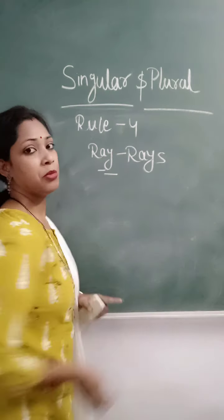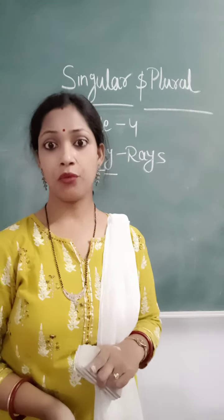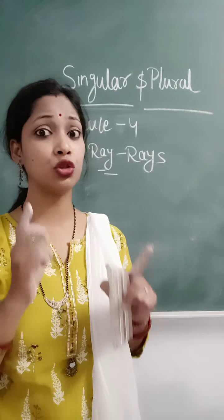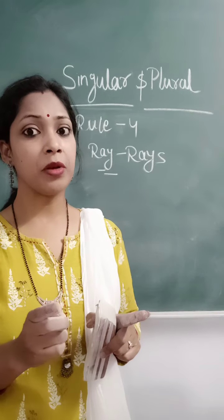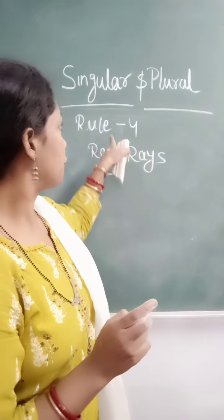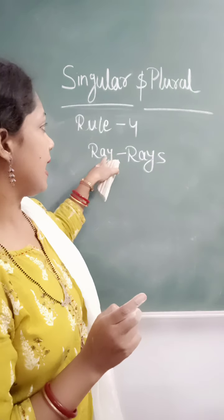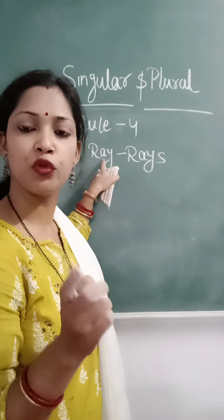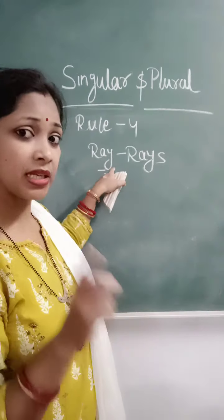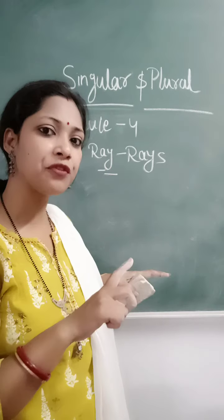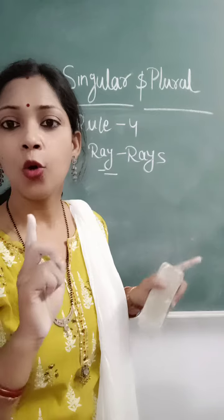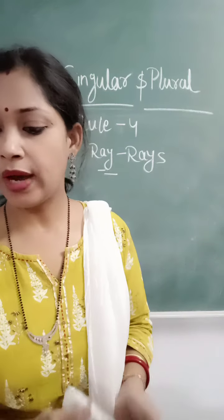So, if Y is preceded by a vowel, or if Y is preceded by a consonant — you have to find out what we will write. If it is Y and before that is a consonant, you will add I-E-S. But if there is Y and before that is a vowel, then you will add only S.